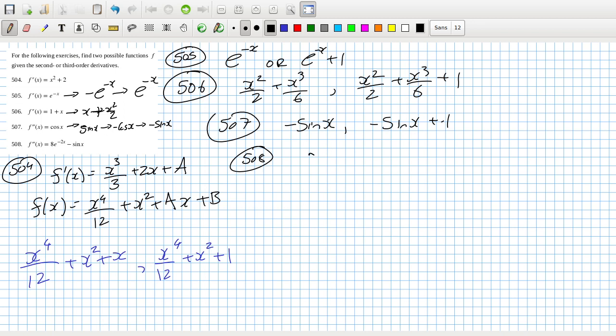Okay let's write it down. The second derivative will become 8e minus 2x over minus 2 plus cos x, and then the first derivative would be 8e minus 2x over 4 plus sine x. So the answer could be divided by minus 2: minus e minus 2x minus cos x.